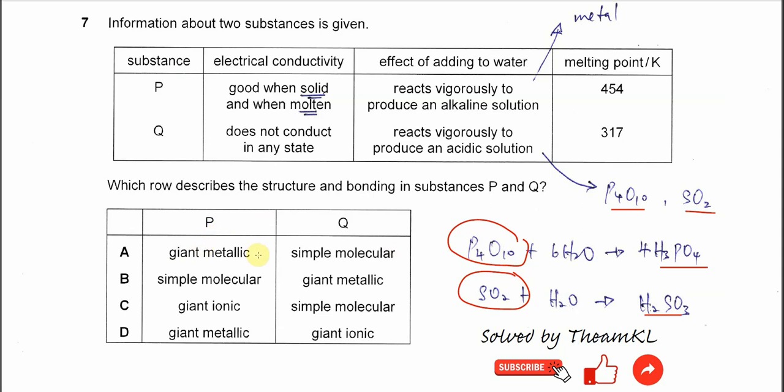For P, it must be giant metallic structure and bonding, so it means either A or D now. Q must be simple molecular. Like what I told you just now: phosphorus oxide and sulfur dioxide. So answer is A. That's all. Thank you.